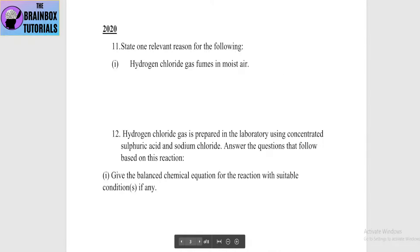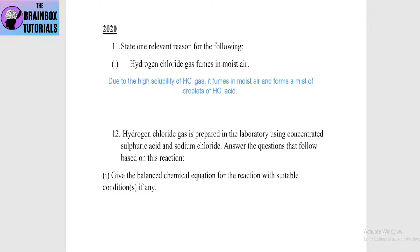Now let's go to 2020 questions. First: state one relevant reason for the following — hydrogen chloride gas fumes in moist air. Answer: due to the high solubility of HCl gas in water, it dissolves and forms fumes in moist air — that is, droplets of hydrochloric acid. HCl gas fumes in moist air and forms a mist of droplets of HCl acid.